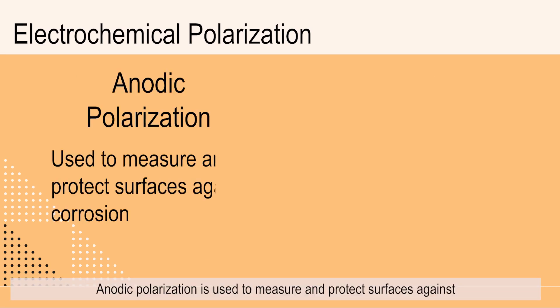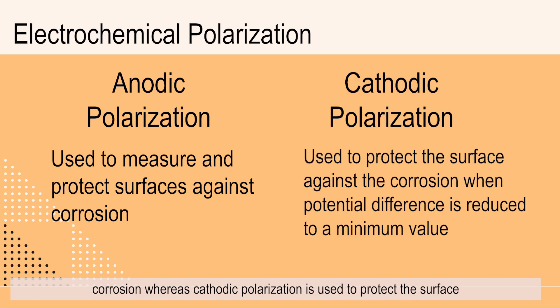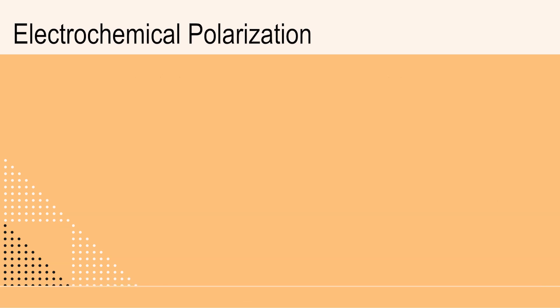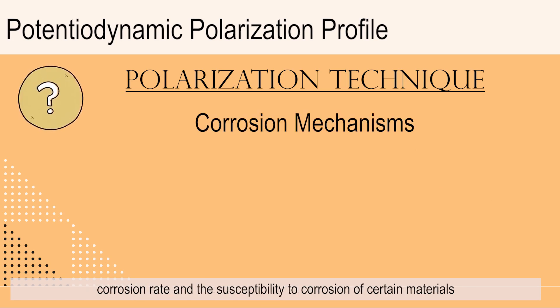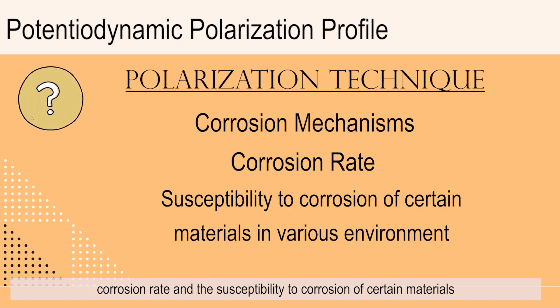Anodic polarization is used to measure and protect surfaces against corrosion, whereas cathodic polarization is used to protect the surface against the corrosion when potential difference is reduced to a minimum value. Potentiodynamic corrosion test is a polarization technique which is used to provide useful information regarding corrosion mechanisms, corrosion rate, and the susceptibility to corrosion of certain materials in various environments.